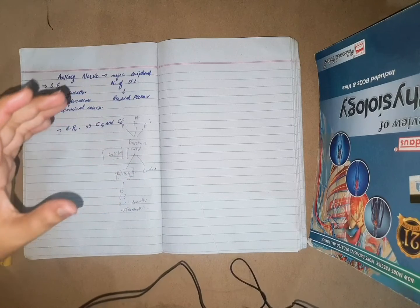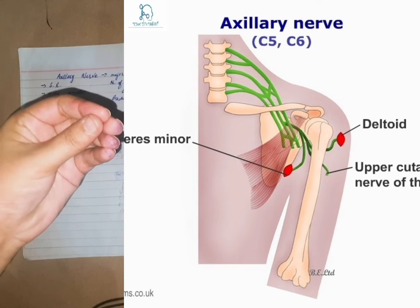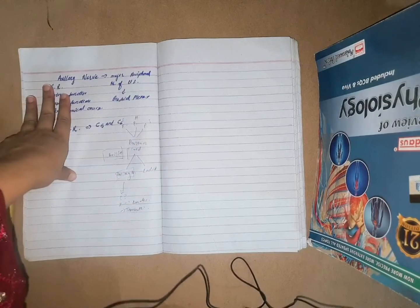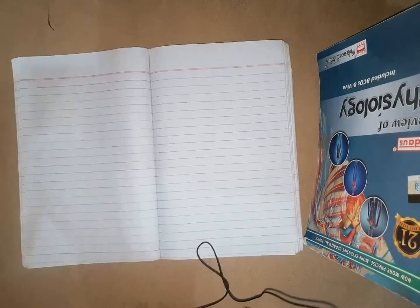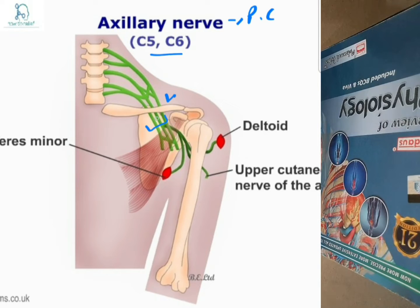You can see this diagram showing the anatomical course of the axillary nerve. The axillary nerve roots are C5 and C6. The axillary nerve arises from the posterior cord. You can see three cords here: the lateral cord, the posterior cord, and the medial cord. These three cords are named with respect to the axillary artery.